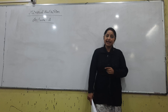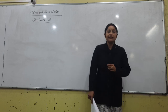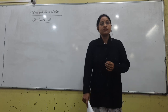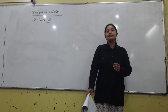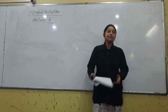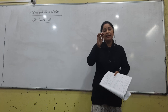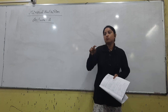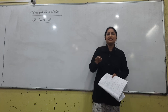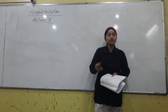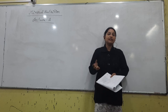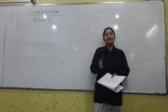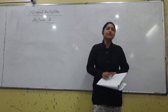Another word is necrosis. The development of dead spots or dead brown spots is called necrosis. These are round brown spots commonly seen in case of citrus plants. That dead spot is called necrosis. And the lightening of green color due to chlorophyll reduction is called chlorosis.